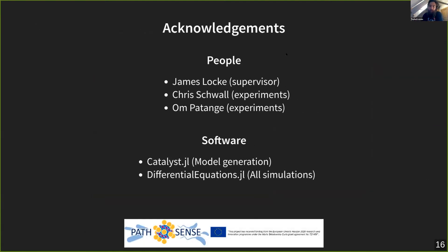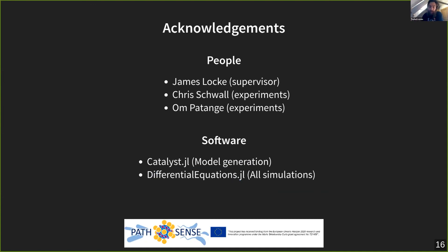I'd like to acknowledge the people involved, especially Chris and Orm, the experimentalists I've been working with. To tie this into the mini symposium: Catalyst has been very useful — all of these biochemical reaction network models are generated by Catalyst, and one advantage is that it's very easy to generate models, making it easier to explore many models at an initial stage. DifferentialEquations.jl has been really important: making all of these parameter maps requires solving a very large number of differential equations, so having a high-performance solver is critical. It also offers stochastic differential equation solvers — and stochastic delay differential equation solvers, which we don't see that often. Thank you all for your attention.